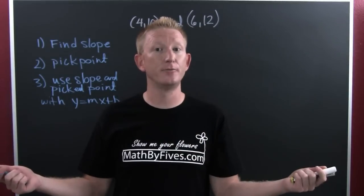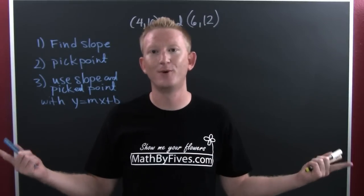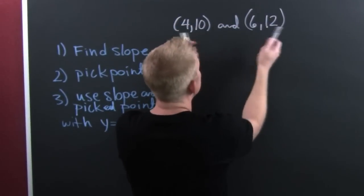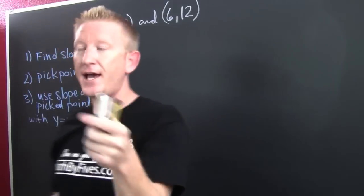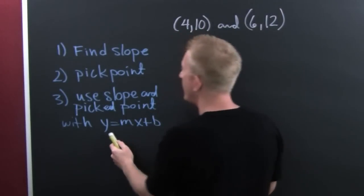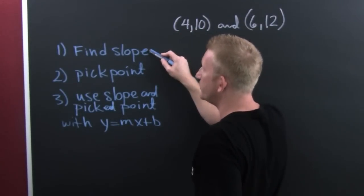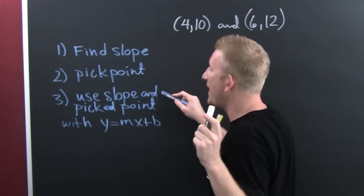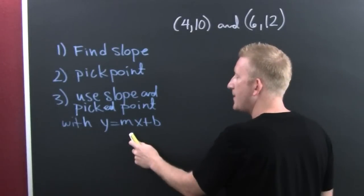How are we going to find a slope? Well, let's go. They give us two points and we have a game plan. First, we're going to find the slope. Then we're going to pick a point. We're going to use that slope and picked point in y equals mx plus b.